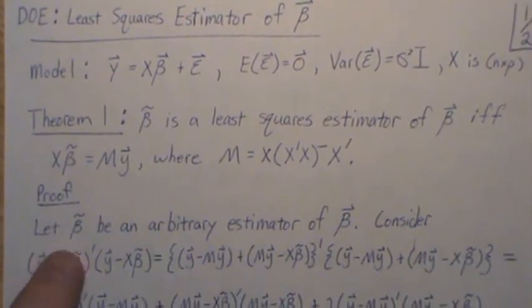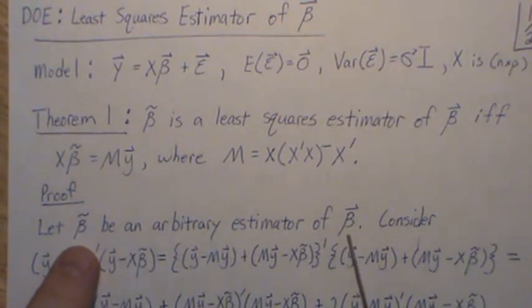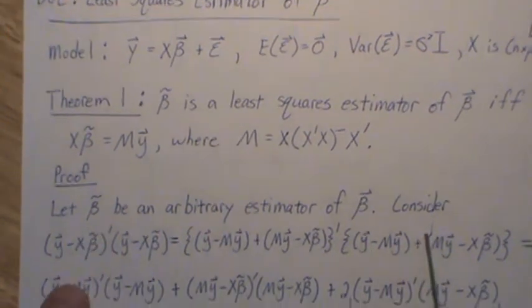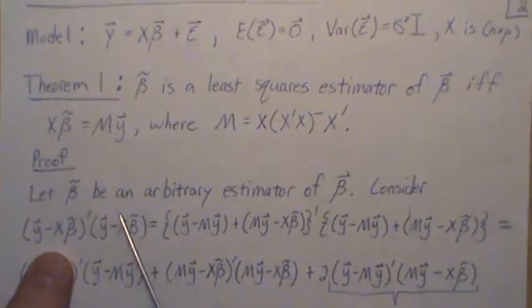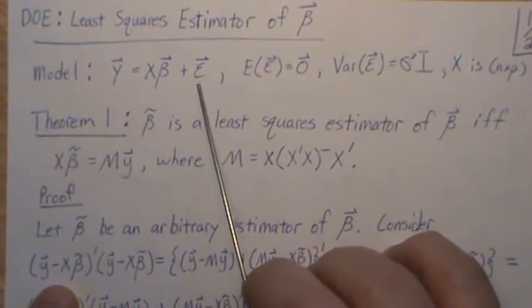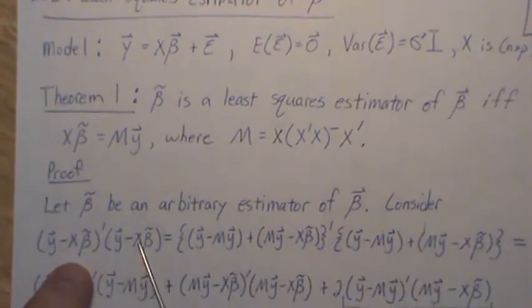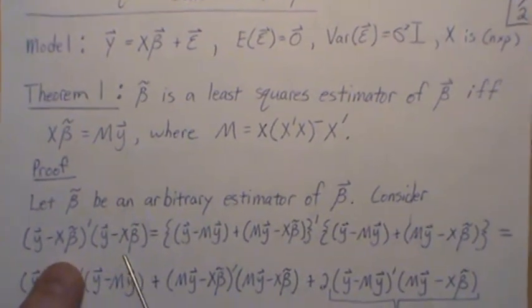So now let's prove it. So let's let beta tilde be an arbitrary estimate for beta. Now consider this here. So y minus x beta tilde transpose y minus x beta tilde. So this is the sum of squared errors, what this represents.